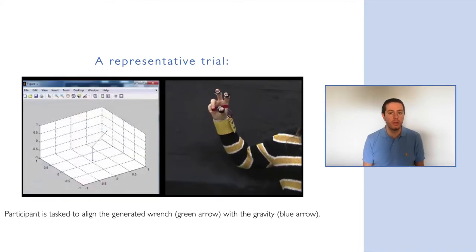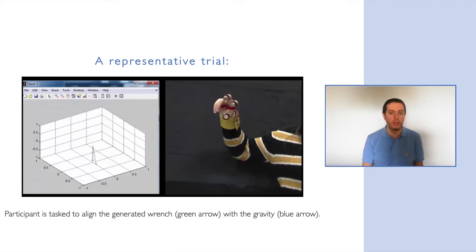As you may see in the video, a user is rotating the hand exploiting vibrating thimbles. The goal and the current orientation are reported on the plot with blue and green arrow respectively, while on the right side is the participant using the system.